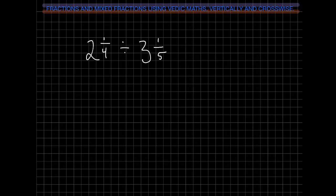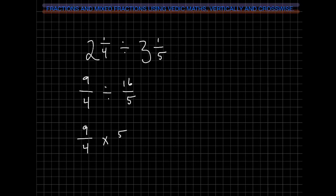Same thing when dividing mixed fractions. First turn them into top-heavy fractions: 4 times 2 is 8, plus 1 is 9, so we have 9 fourths. Then 3 times 5 is 15, plus 1 is 16, so 16 fifths. Then convert to a multiplication problem: 9 fourths times 5 sixteenths. We get 45 over 64 as our answer.